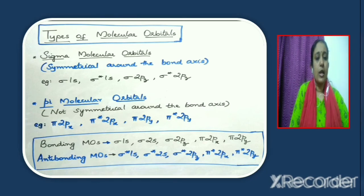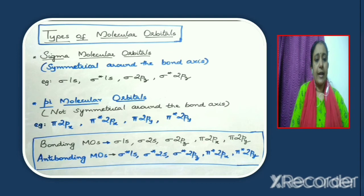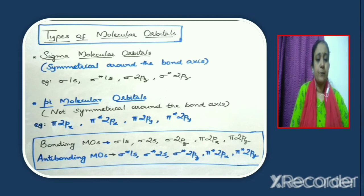All these are sigma molecular orbitals. The different pi molecular orbitals are: pi 2px, pi star 2px, pi 2py, pi star 2py. Now consider the different bonding molecular orbitals: sigma 1s, sigma 2s, sigma 2pz, pi 2px, pi 2py. So under bonding molecular orbitals, we have both sigma type and pi molecular orbitals. The anti-bonding molecular orbitals are: sigma star 1s, sigma star 2s, sigma star 2pz, pi star 2px, pi star 2py. Here in anti-bonding molecular orbitals also, we find both sigma and pi molecular orbitals.